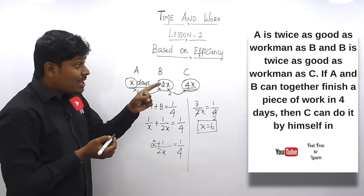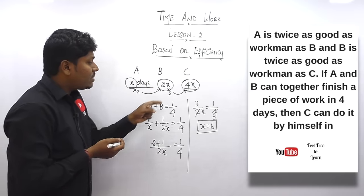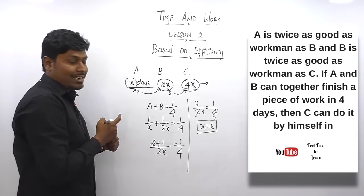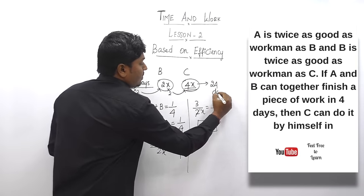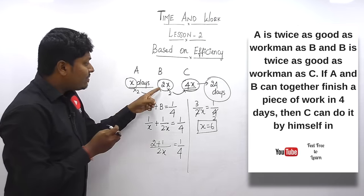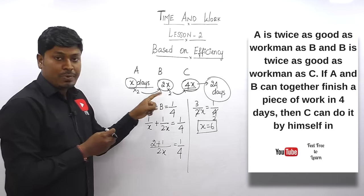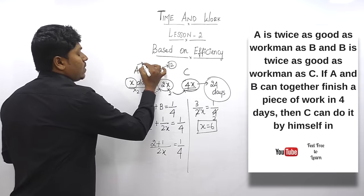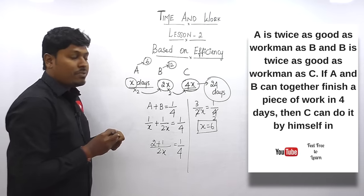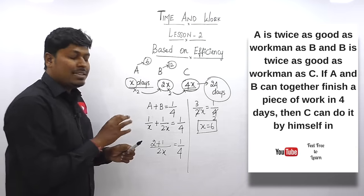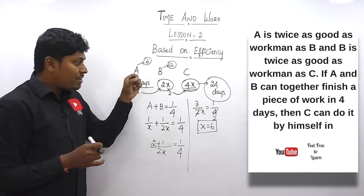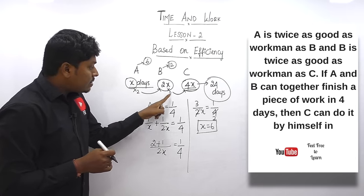We found x = 6. Our target is to find how many days C alone takes. We know C takes 4x days, and x = 6, so C = 4 × 6 = 24 days. If they ask about B alone: B = 2x = 2 × 6 = 12 days. A alone takes 6 days, B alone takes 12 days, C alone takes 24 days. The answer for question one is 24 days.